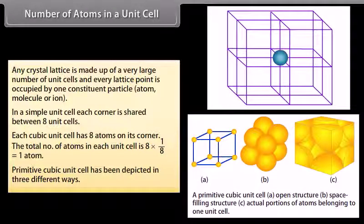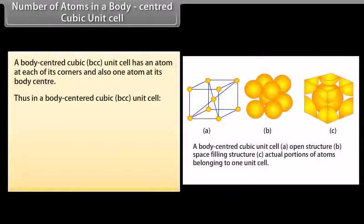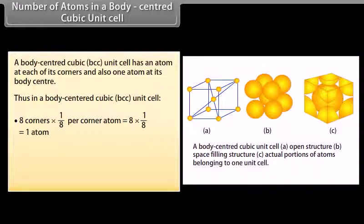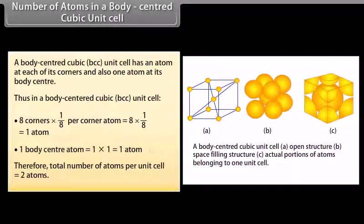The primitive cubic unit cell has been depicted in 3 different ways. Number of atoms in a body centered cubic (BCC) unit cell: this cell has an atom at each of its corners and also 1 atom at its body center. Thus, 8 corners × (1/8) per corner atom equals 1 atom. One body-centered atom equals 1 atom. Therefore, the total number of atoms per unit cell is equal to 2 atoms.